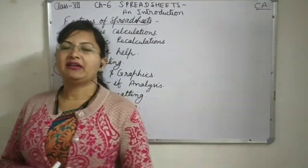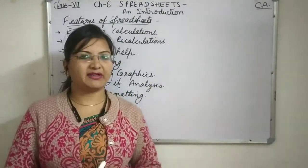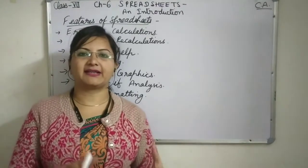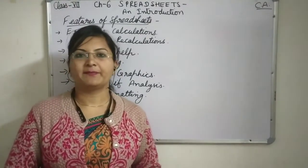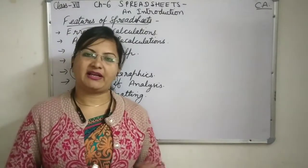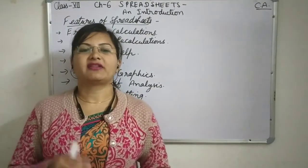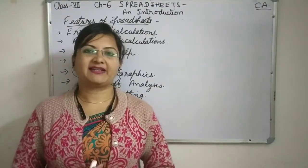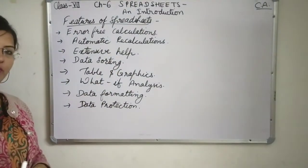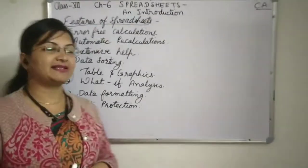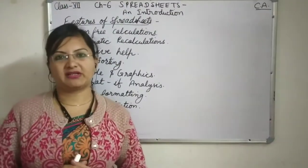Once we have the data to compare, we can compare it. In the table, data is arranged in rows and columns with different percentages. Then we will be able to analyze. With charts also — bars, graphs and charts — that will be very helpful to analyze the data. Now, data formatting: the data in the spreadsheet in the form of a table can be formatted.